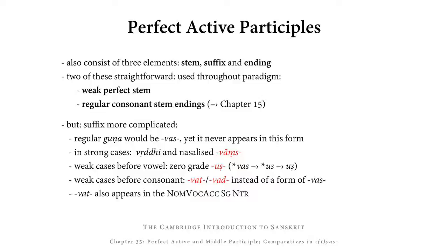Instead, in the strong cases of the participle, this suffix appears in VRTTI and nasalized as WAS. In the weak cases of the participle, before case endings that begin with a vowel, it appears in zero grade USH. What we have here is the regular GUNA WAS minus the GUNA vowel A, which would theoretically give us USH, but through RUKI, the S after the U changes into SH, so we have USH.